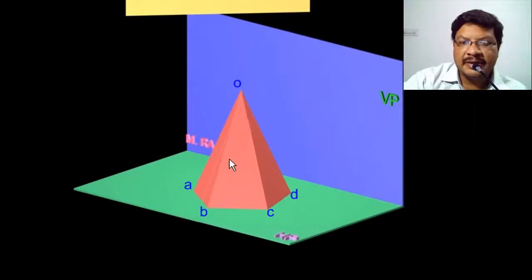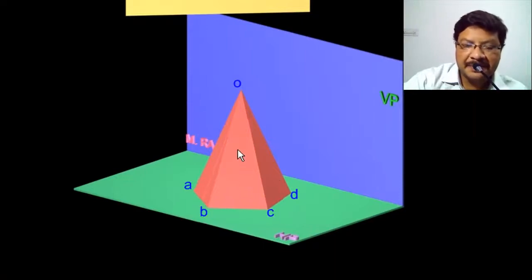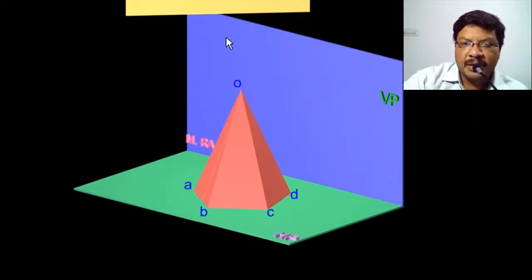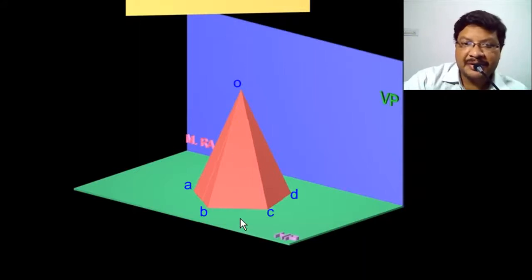In this problem, the solid is resting on its base on the HP and it is cut by a section plane perpendicular to HP and inclined to VP. When the section plane is perpendicular to HP, you have to represent the section plane with its horizontal trace.